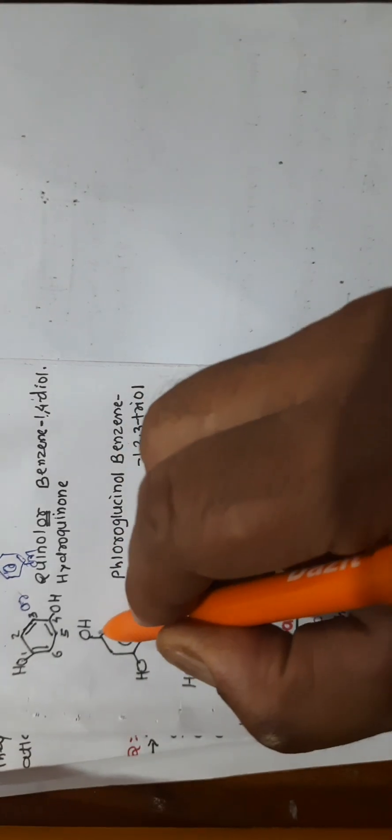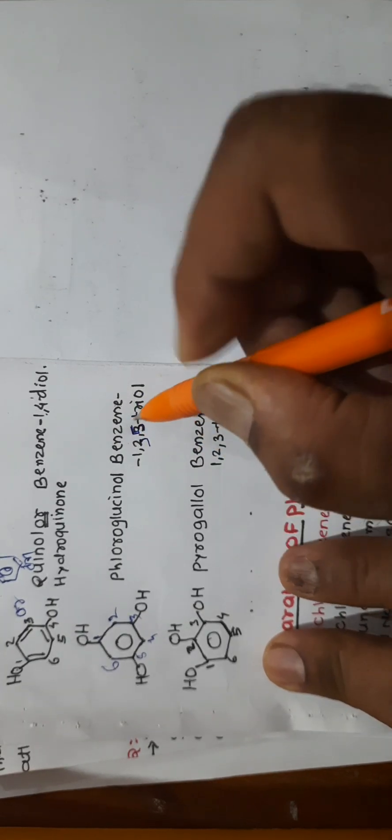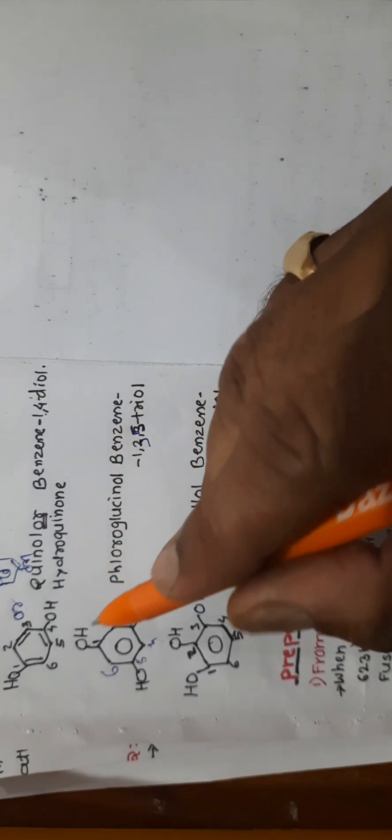Examples of trihydric phenols: when three OH groups are at positions one, two, and three, it is pyrogallol — IUPAC name benzene-1,2,3-triol. When OH groups are at positions one, three, and five (alternating, no gaps), another arrangement is also named accordingly.